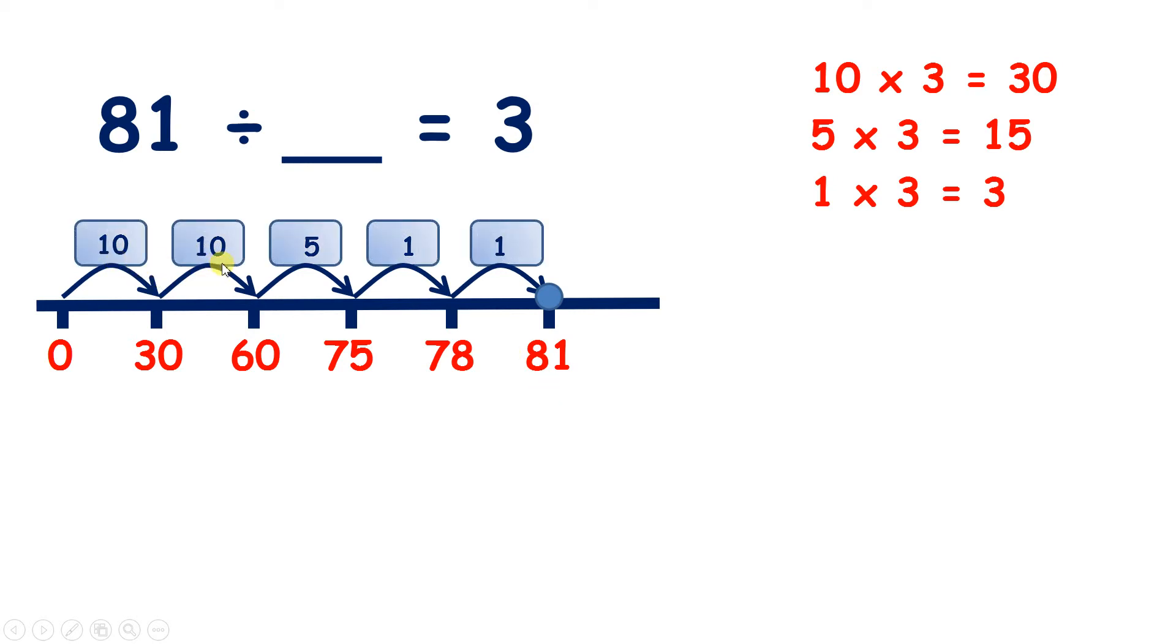So we counted on a total of 27 steps of 3. So 81 divided by 27 equals 3.